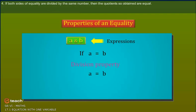And 4, if both sides of equality are divided by the same number, then the quotients so obtained are equal.